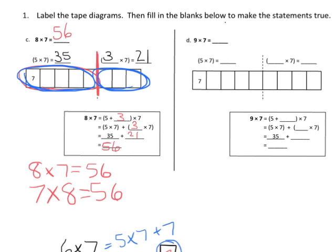Let's just do this second one over here, and it'll go a little bit quicker. So we have 9 times 7, but we've broken it up into 1, 2, 3, 4, 5, and 1, 2, 3, 4. So we've broken it up into 5 and 4.